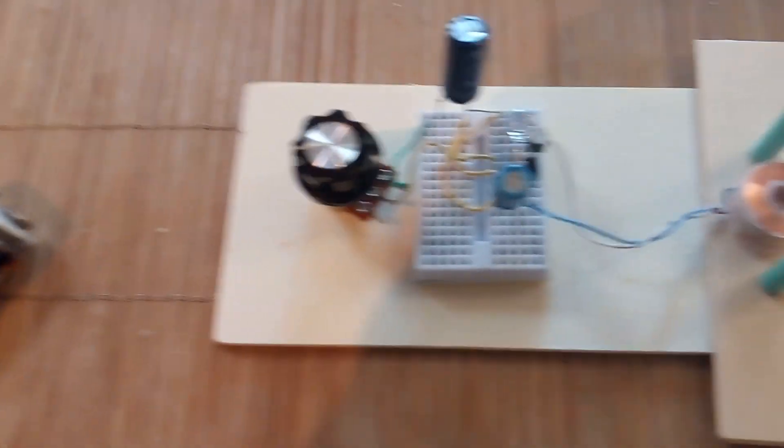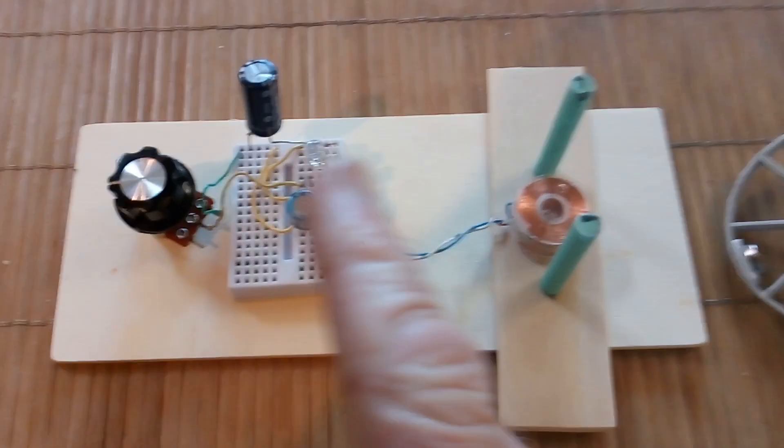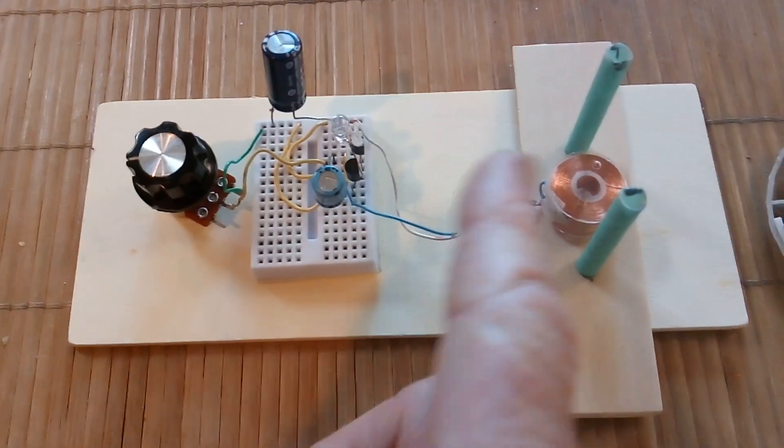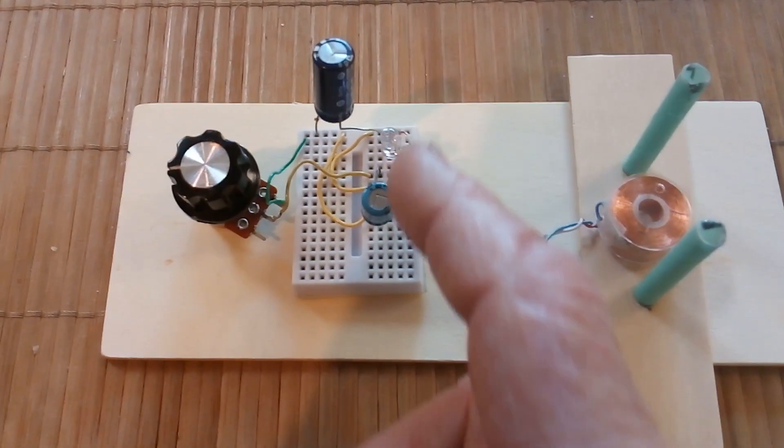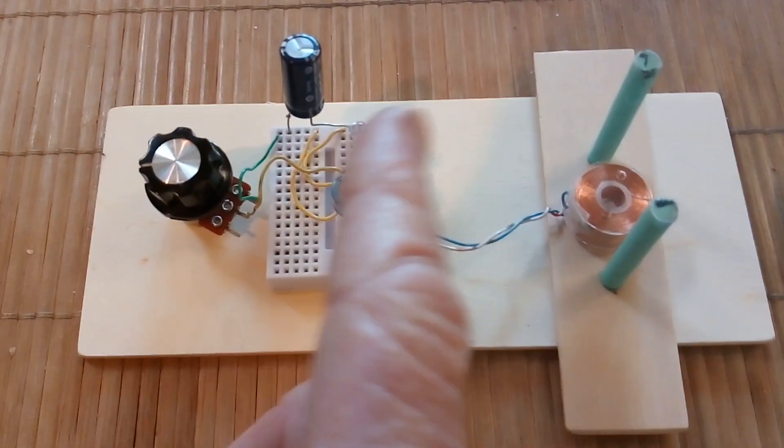There's the blinker, which is basically like a tank circuit between the two components—the capacitor and the coil—with a complementary transistor trigger and then a potentiometer to help control it.